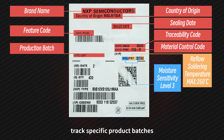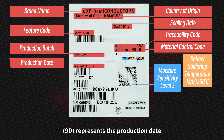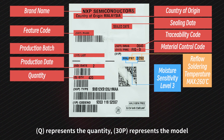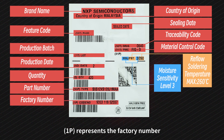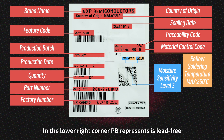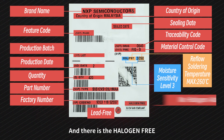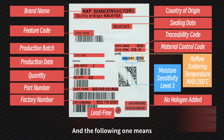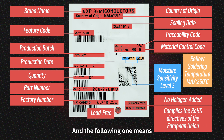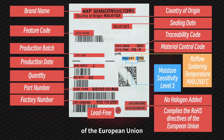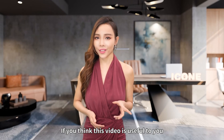The code represents the production batch — when there is a problem with the products, it can help manufacturers quickly track specific product batches. 9D represents the production date, Q is the quantity, 13P is the model, and 1P represents the factory number. In the lower right corner, PB represents lead-free, and there is also a halogen-free marking, followed by a symbol indicating compliance with the RoHS directive of the European Union.